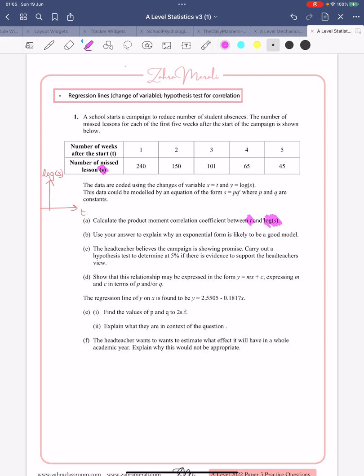So for part a, if you're using the Casio, you're going to menu, number six, then number two. In the x column you're typing one, two, three, four, five. In the y column you're typing in log 240, log 150, log 101, log 65, log 45, and so on. What you should get when you press option is regression calc, and what you should see is an r value of minus 0.999.